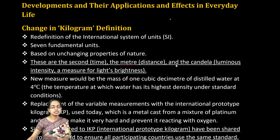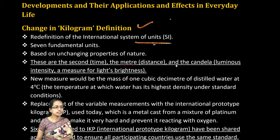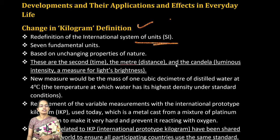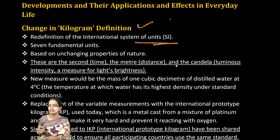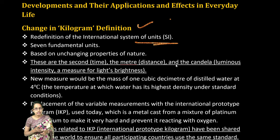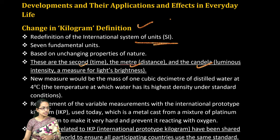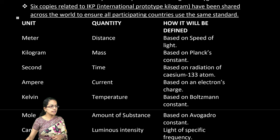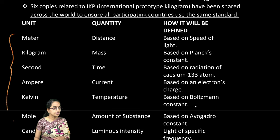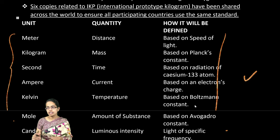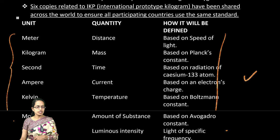The first topic is the changes in the definition of the kilogram. There has been a redefinition of SI units. The three most standard units are time, distance, and intensity or brightness, with second, meter, and candela as the basic units. Copies have been circulated for the various units and how they are defined, and the basis of their definition is very important.